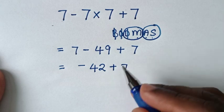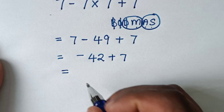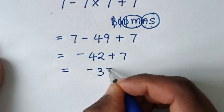Now we're left with this addition: negative 42 plus 7, which equals negative 35.